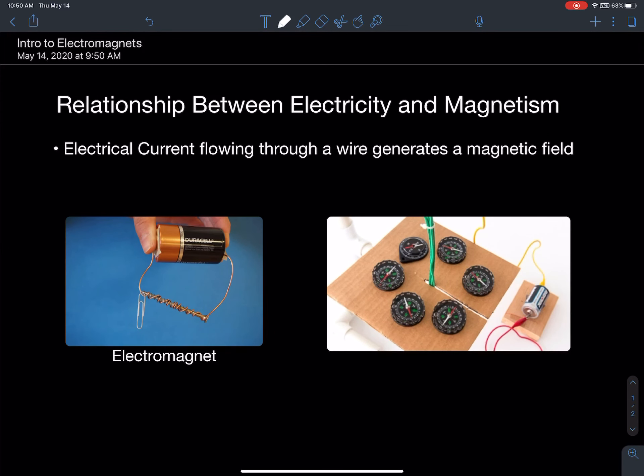One other area that you might want to focus on in your criterion D reflection is the relationship between electricity and magnetism in devices. That was a very interesting discovery made in the 1800s, that when current flows through a wire, it generates a magnetic field.